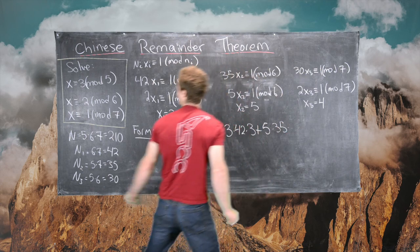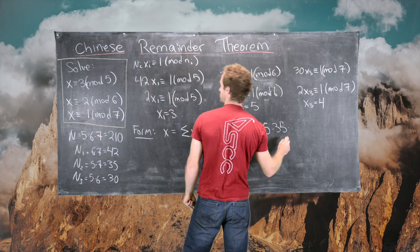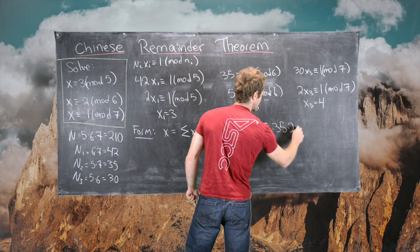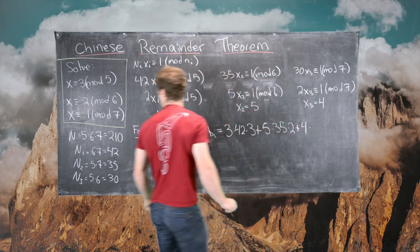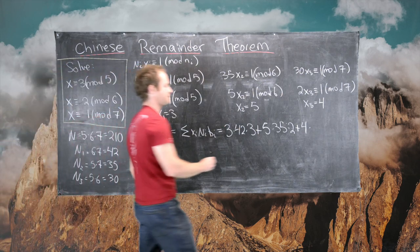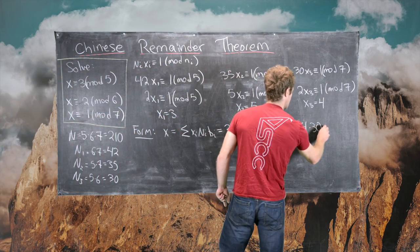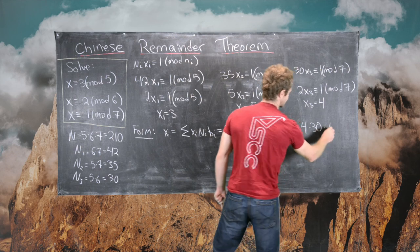Times B2, which is 2, and then plus X3, which is 4, times N3, which is 30, times B3, which is 1.